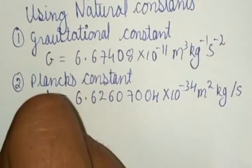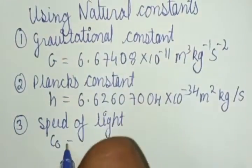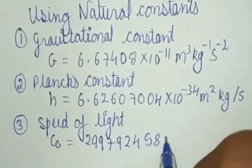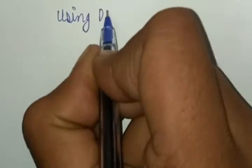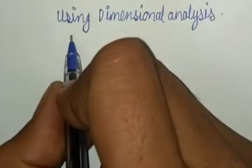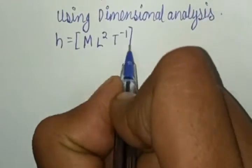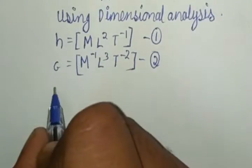And the third one is speed of light in vacuum. Using dimensional analysis, let me write the dimensions of the three constants: Planck's constant, gravitational constant, and speed of light.